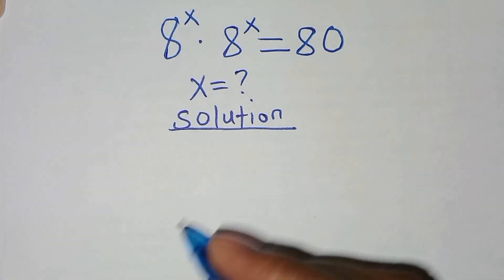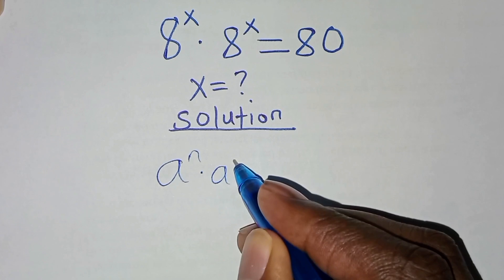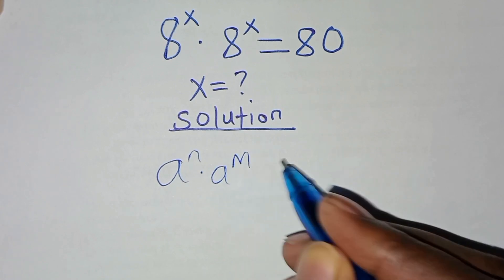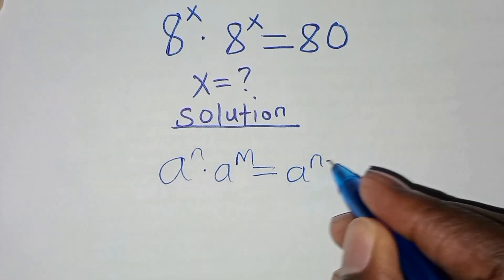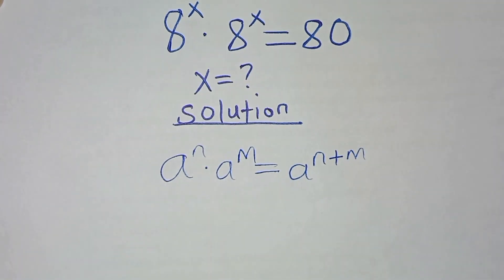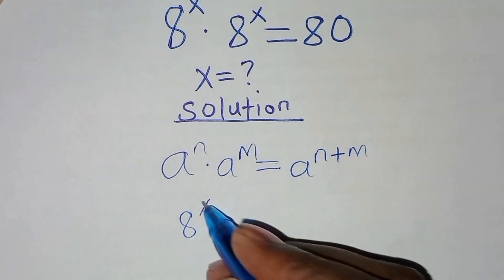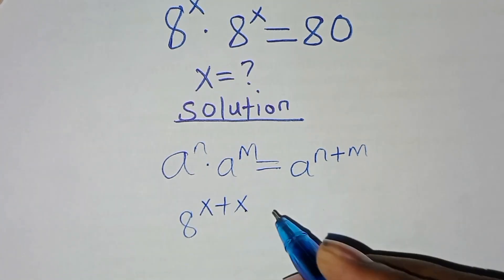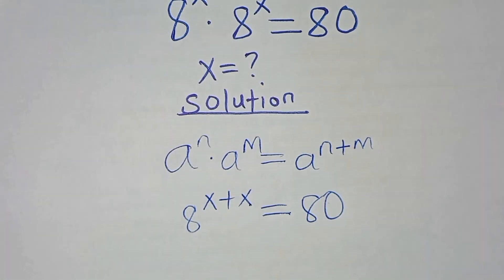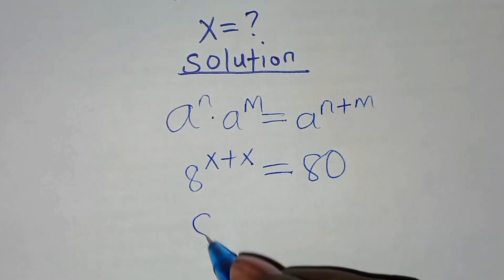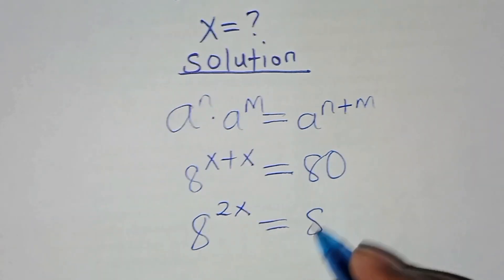This exponential equation is in the form of 8 to the power n multiplied by 8 to the power m, which we can express as 8 to the power n plus m. So the next step, we'll have 8 to the power x plus x, this is equal to 80. So here we'll have 8 to the power 2x, this is equal to 80.